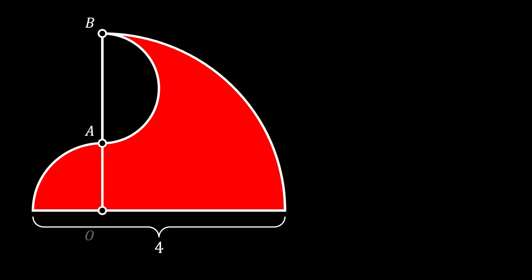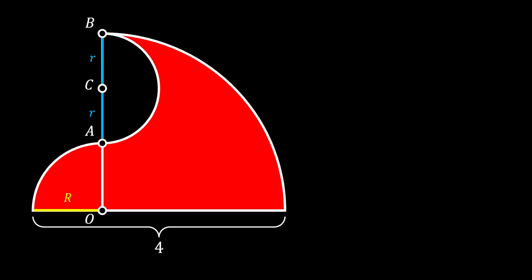We will mark A and B as the points of intersection between the half circle and the quarter circle, and O will be the center of these two quarter circles. Let's also mark the point C that will represent the center of our half circle. Now let's draw a radius of this half circle and mark it as r. You can clearly see that the lines AC and CB will also have the length of r. Now let's set the radius of our smaller quarter circle as big letter R, which means the radius of our bigger quarter circle must have the length of 4 minus R.